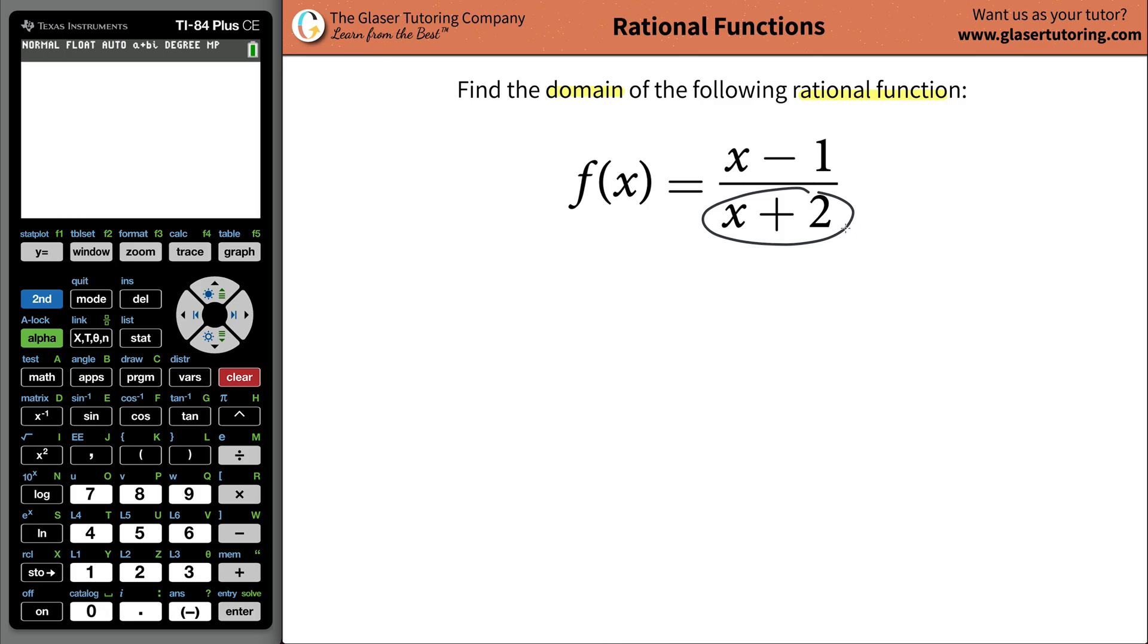Well, it turns out there's one special number you cannot have in a denominator. What is it? It's big old 0, right? Big old 0. So whenever you have a fractional function here, you can just basically take the denominator and set it equal to 0.